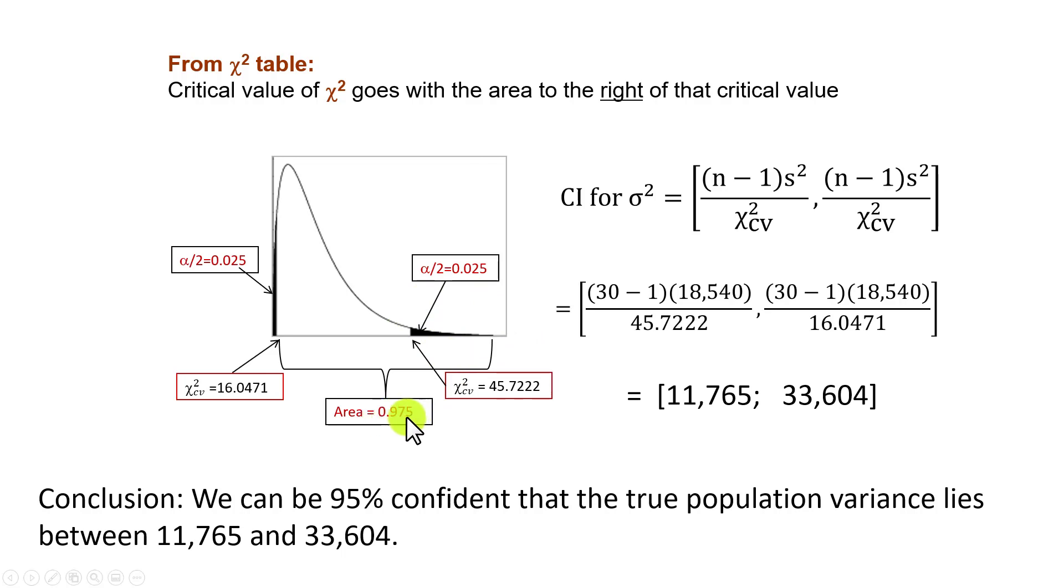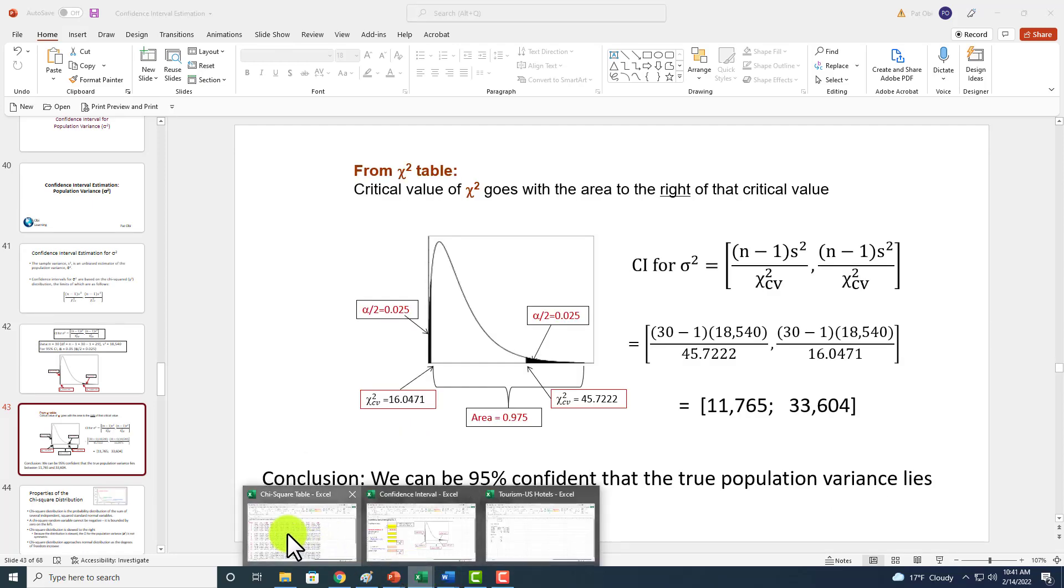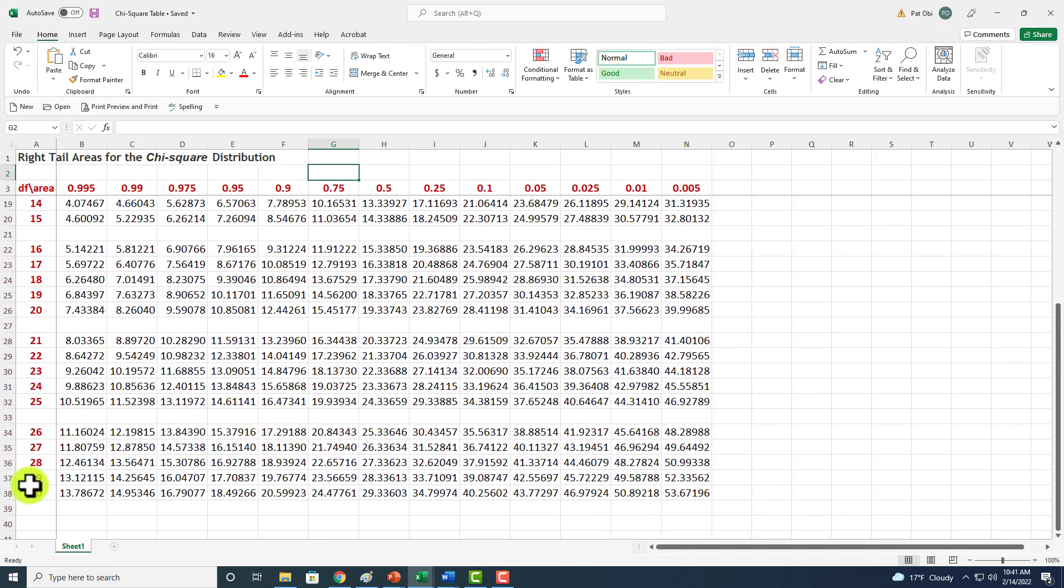Going to the chi-square table, and based on the 29 degrees of freedom which we determined, scrolling down to the 5% level, that's 29 degrees of freedom right there. We're going to look for the critical value corresponding to the area of 0.975 to the right of it, and that gives us this critical value of 16.047.